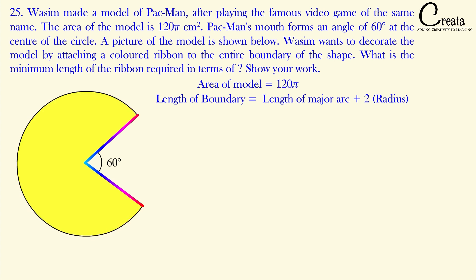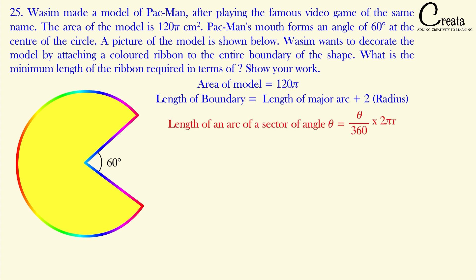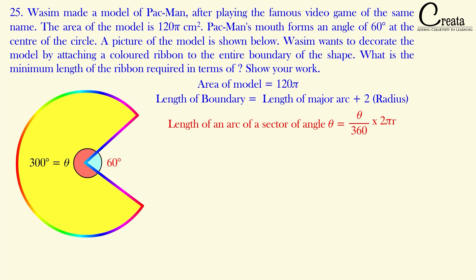The formula for the length of an arc is (θ/360) × 2πr. Here we are talking about the major arc, so the applicable angle is the major sector angle. The complete revolution is 360°, and the mouth angle is 60°, so the major arc angle is 360° − 60° = 300°. The only missing component is the radius.